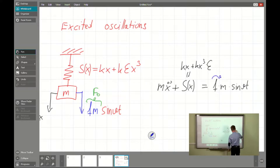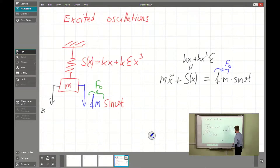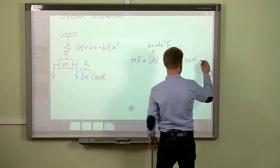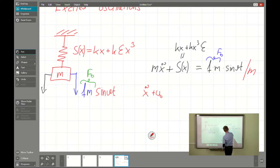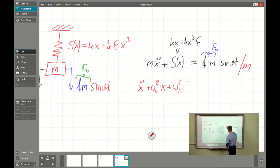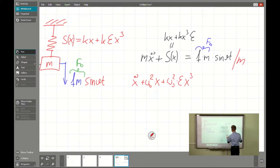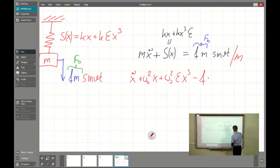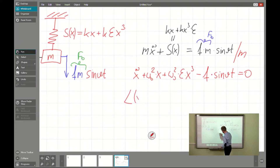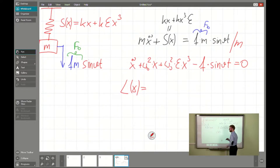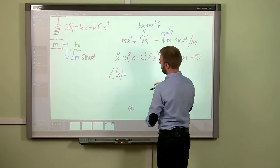As always, we simplify by the mass. We get omega₀² times x plus omega₀² times epsilon times x³. I will put everything on the left-hand side as last time, because I need that form for the application of the Galerkin method — specifically to use the operator of the left-hand side to formulate the minimization condition.